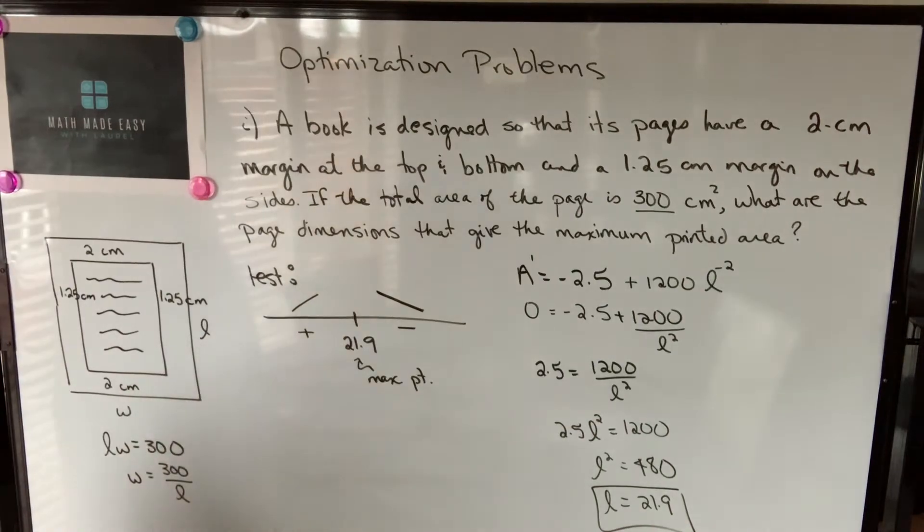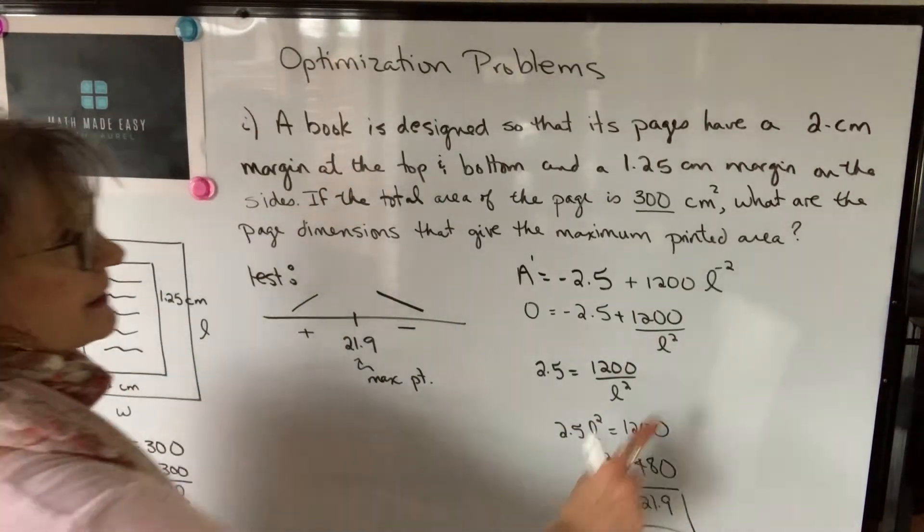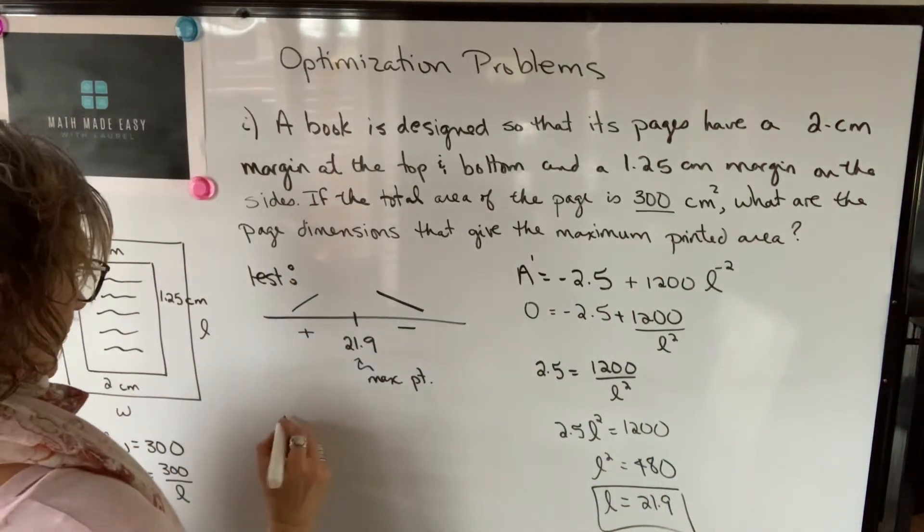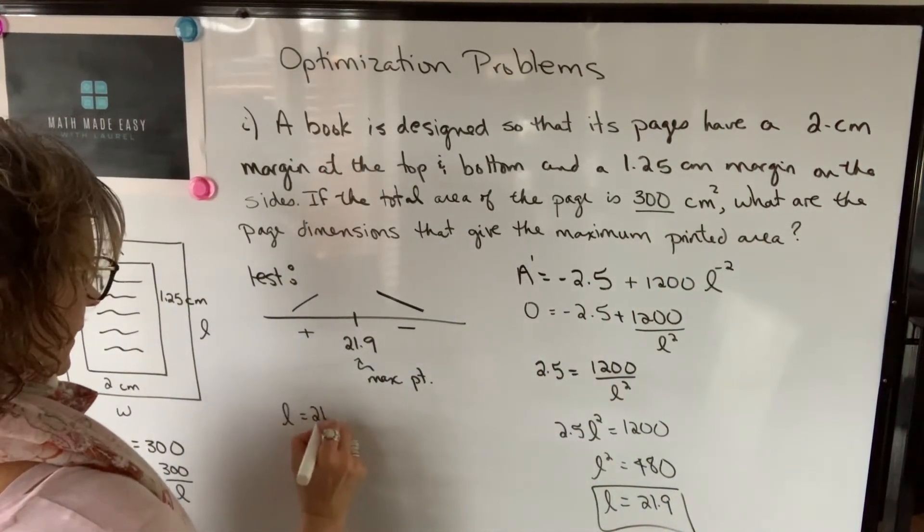And then we'll make sure we've answered the question. It says, what are the page dimensions that give the maximum printed area? Well, we know the length is 21.9 centimeters.